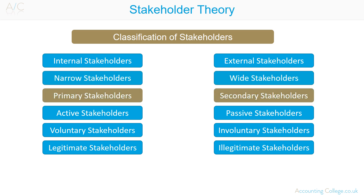Primary and secondary stakeholders. Not all stakeholders are equal — some stakeholders are less important to a business than others. Primary stakeholders are those groups seen by the business to be vital to the organisation's success or failure. They have direct influence over the business, for example government, shareholders, customers, etc.